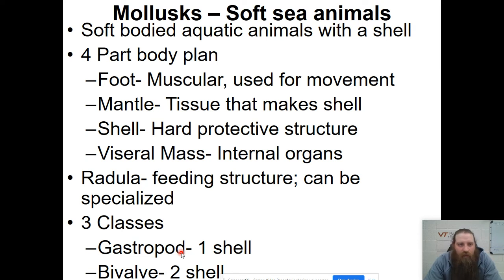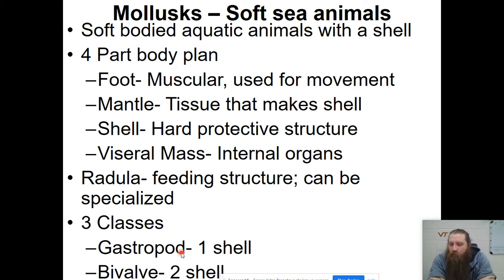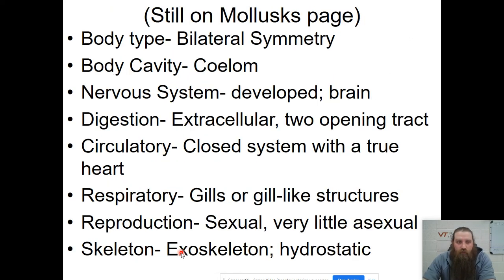Our molluscs — Mollusca is the Latin word. These are soft-bodied aquatic animals and many of them use a shell. They have a four-part body plan: a foot, a mantle, a shell, and the visceral mass — which is all the internal organs. They also use a radula as their feeding structure, which is like a tongue that has teeth on it. There are three different classes; the gastropod and the bivalve are pretty important, referring to how many shells they have.